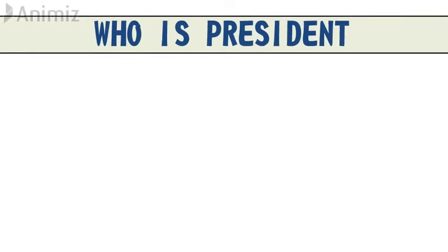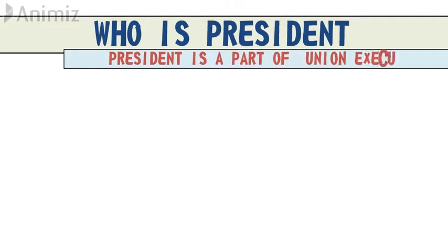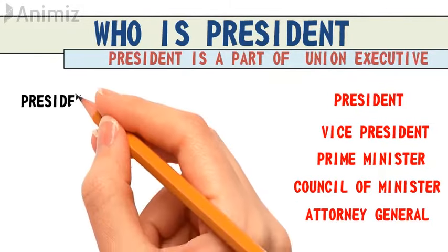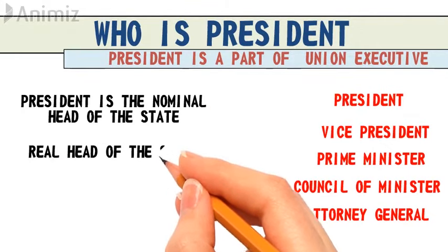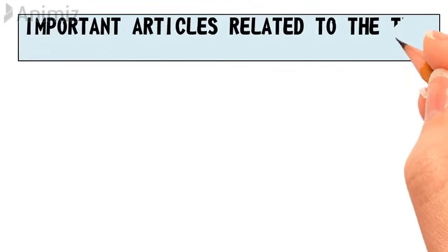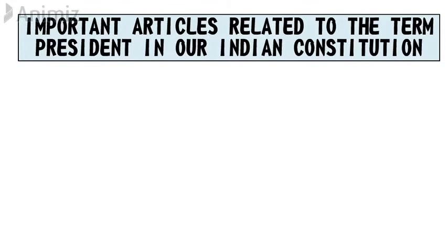The President is a part of the Union Executive. Union Executive consists of the President, Vice President, Prime Minister, Council of Ministers, and Attorney General. The President is the nominal head of the state, while the real head of the state is the Prime Minister. The nominal head means the front man or cover man — whose name is only used for all activities happening in the state. The real head is the Prime Minister.